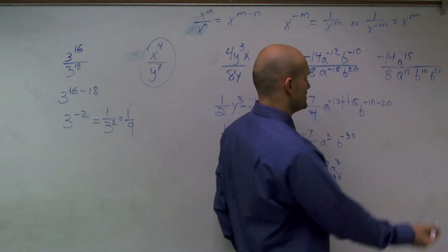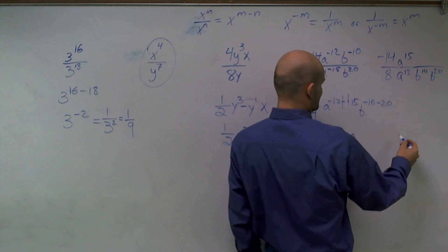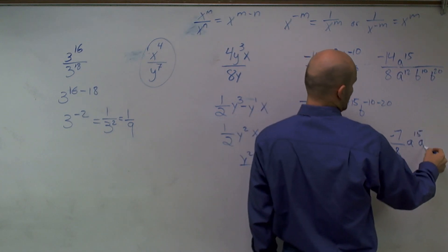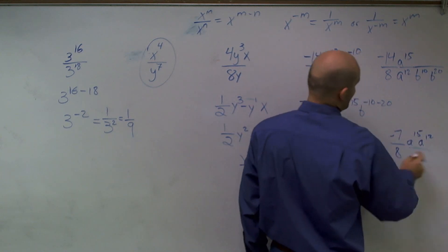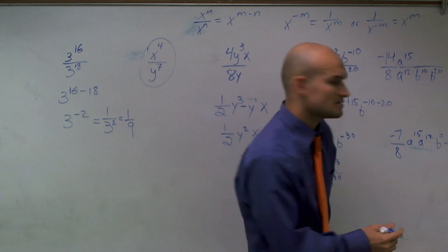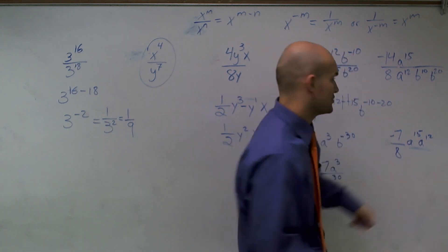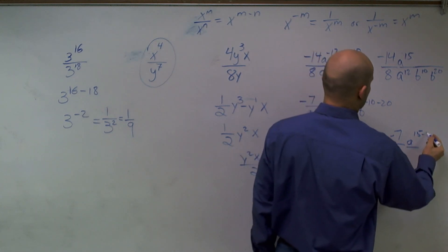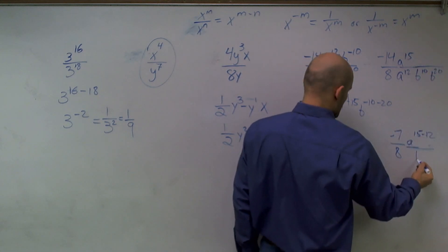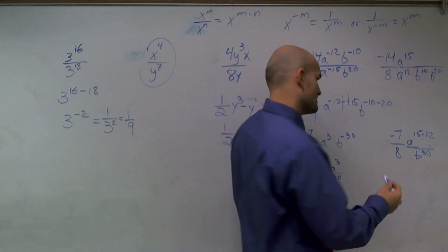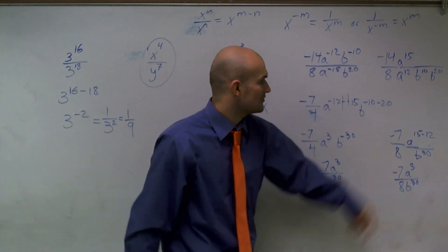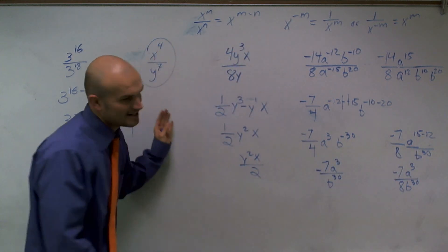Looking at it a second way, we could get the same answer. Negative 14 divided by 8 reduces to negative 7 over 8 — giving a to the 15th over a to the 12th. Then on the bottom, b to the 10th times b to the 20th is b to the 30th. Since they're already on the bottom, I don't subtract them. And 8 to the 15th minus 12 is 8 to the 3rd. So I have negative 7 times 8 cubed over b to the 30th. I hope that extra example was helpful.